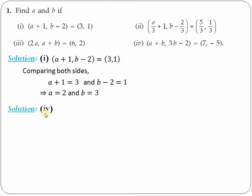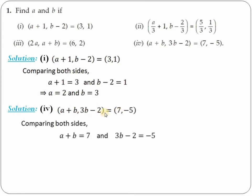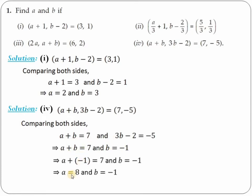For question four: A+B must equal 7, and 3B-2 must equal -5. We have two unknowns — A and B — but from the second equation there is only one unknown, B. Solving gives B = -1. Substituting B = -1 into the first equation gives A = 8. So A = 8 and B = -1.